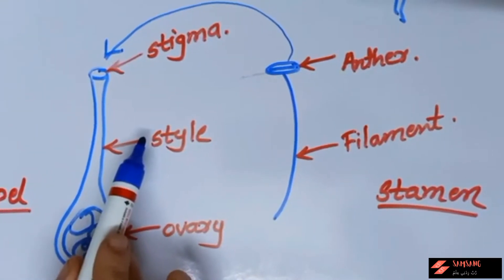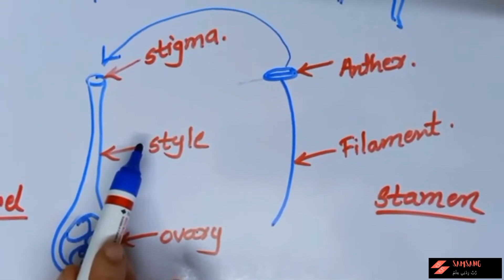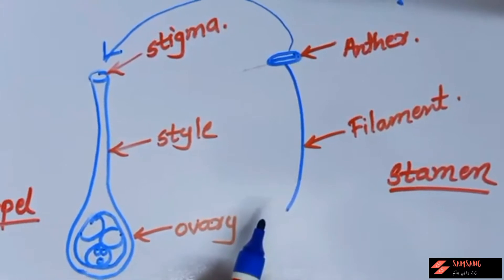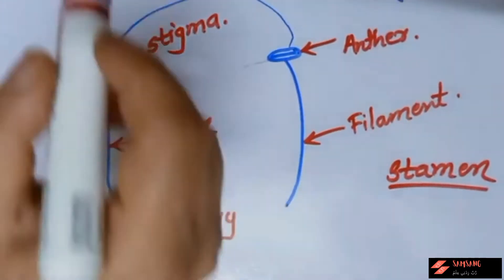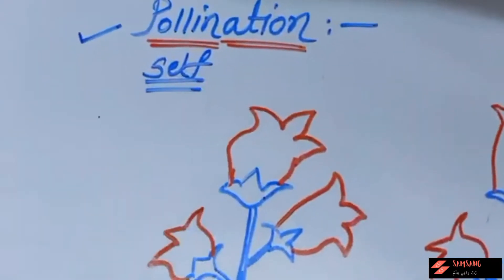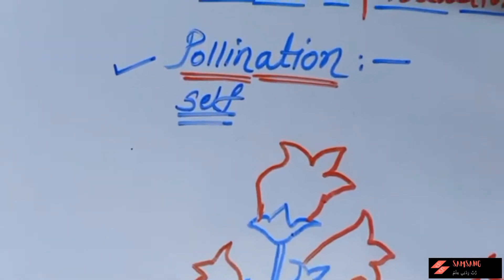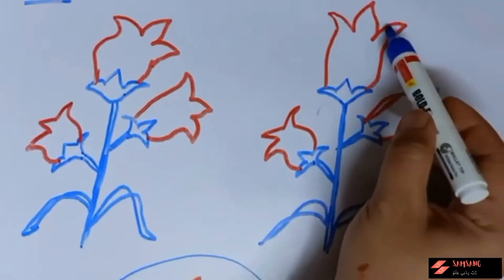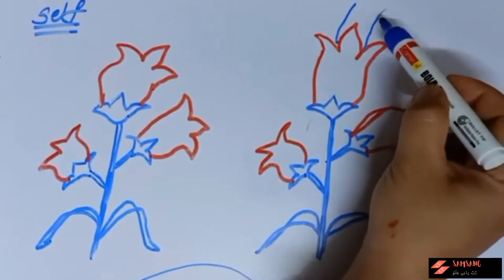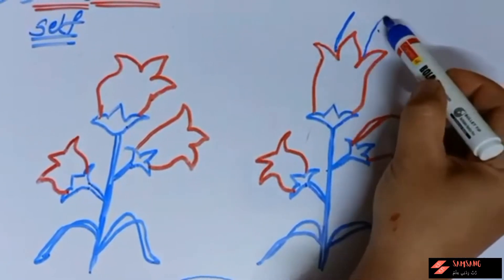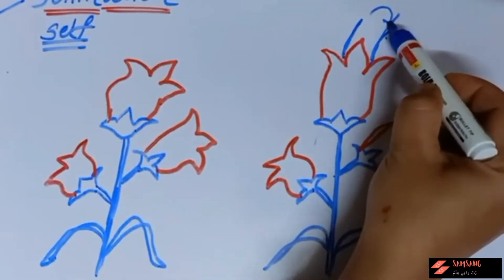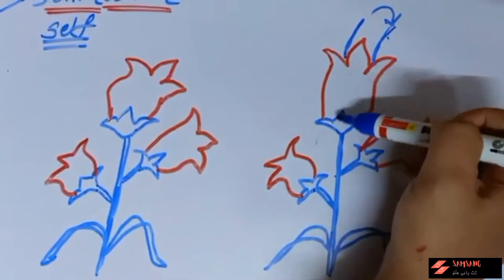Pollination is of two main types in the textbook, but actually three types exist. The first type is self-pollination and the second one is cross-pollination. In self-pollination, the transfer of pollen grain from the anther of stamen to the stigma of carpel takes place in the same flower of the same mother plant.